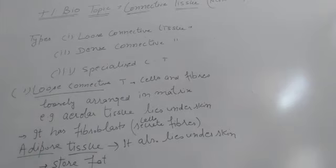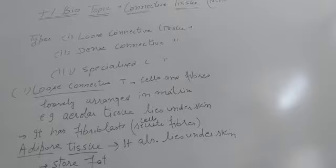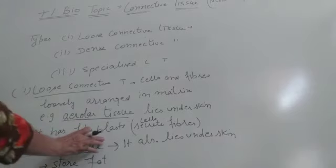Loosely arranged in the matrix. In this, the cells and fibers, they all are loosely arranged in the matrix. Example is areolar tissue and adipose tissue. Now, if we talk about the areolar tissue, areolar tissue lies under the skin. Areolar and adipose both lie under the skin.